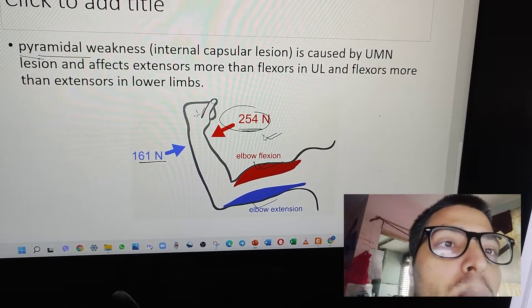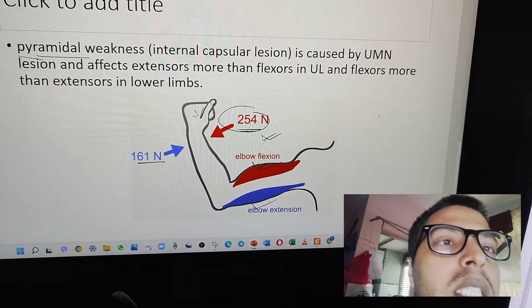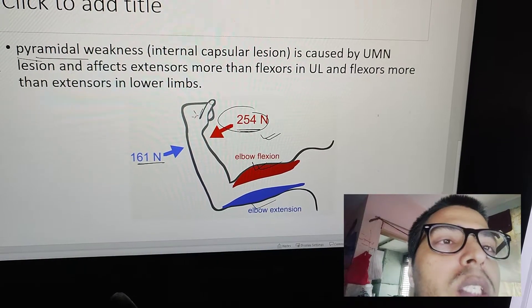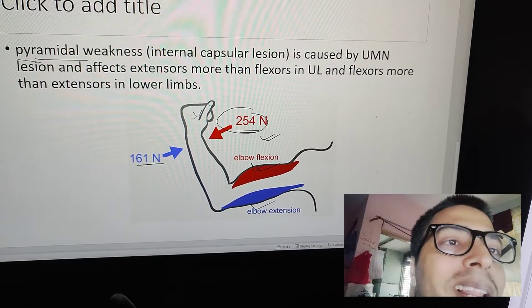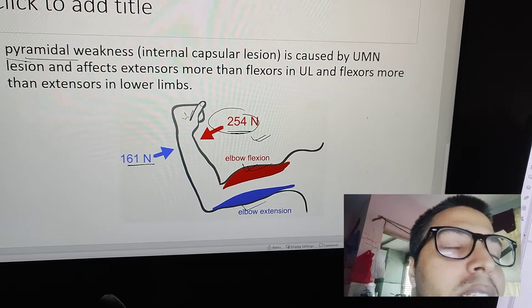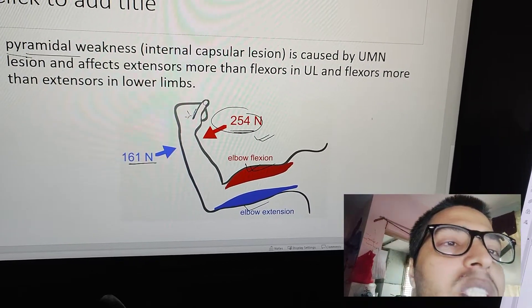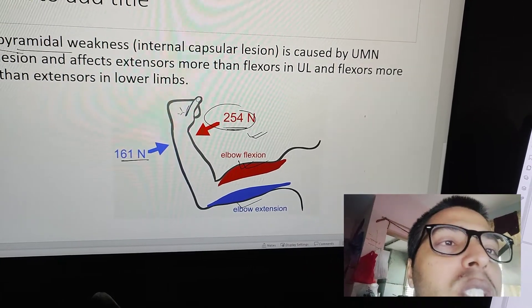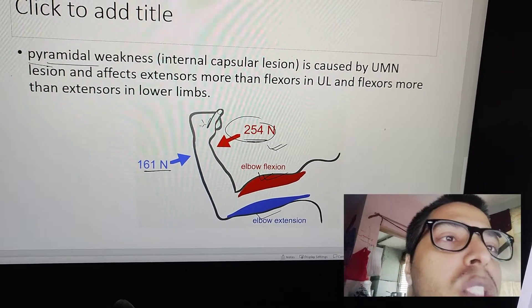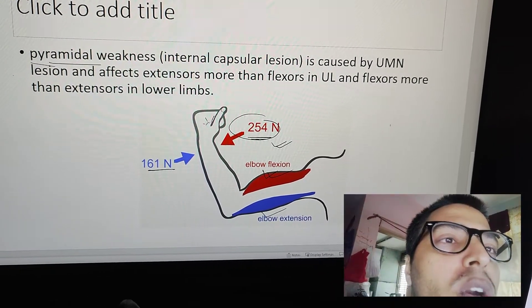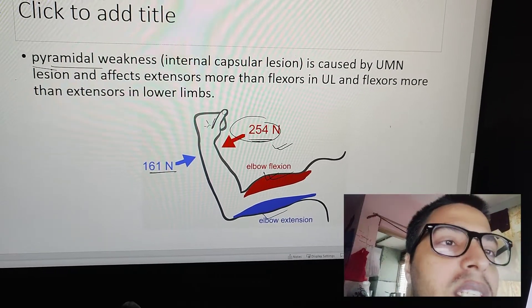This is exactly opposite in lower limbs. In lower limbs, flexors are weaker - your hip flexors and knee flexors are weaker when compared to extensors. These extensor groups of muscles are more used, and that's why they become more powerful compared to flexor groups.